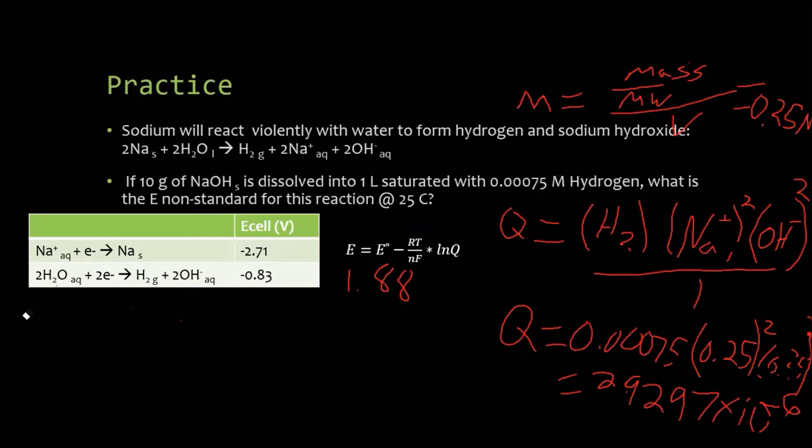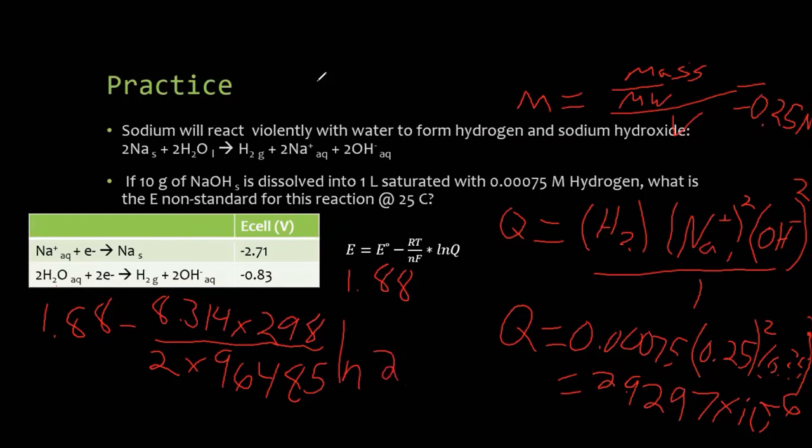So now calculating my E cell standard now. E cell non-standard. So we have 1.88 minus R T 298. Please note, cell potential depends on temperature. So we can see this drop as cell potential goes down. How many electrons are lost? Well, 2 from sodium, 2 from water. So it's 2. 2 are lost by sodium, 2 are gained by water. Faraday's constant, 9, 6, 4, 8, 5.